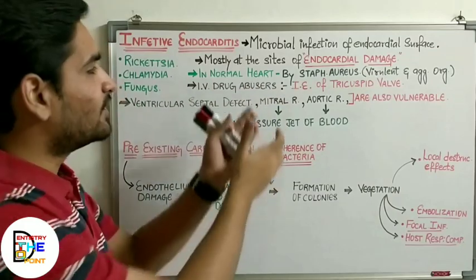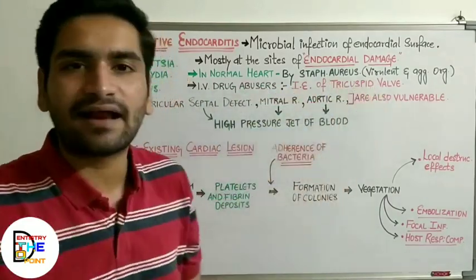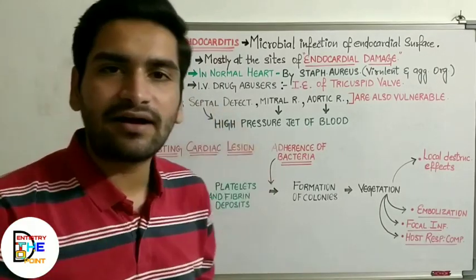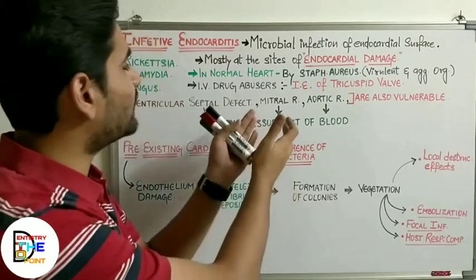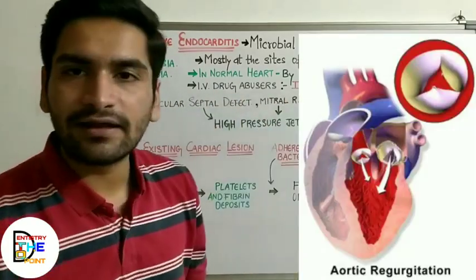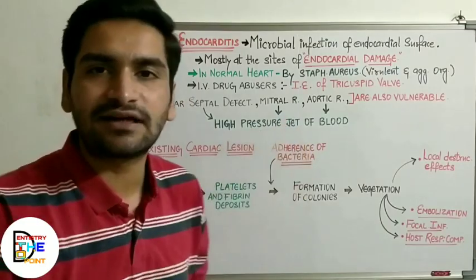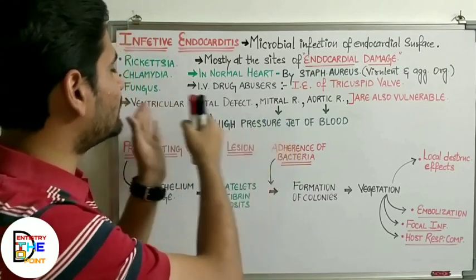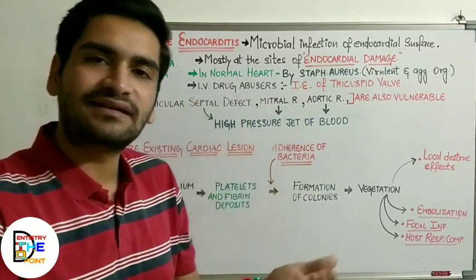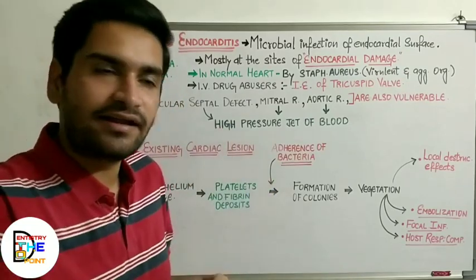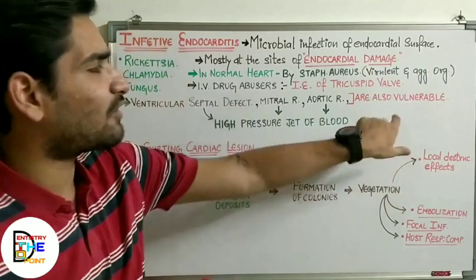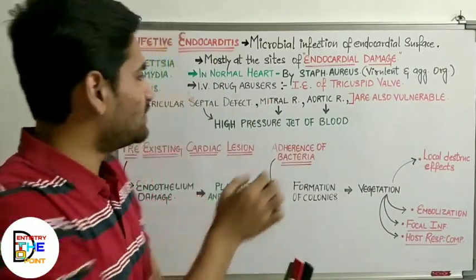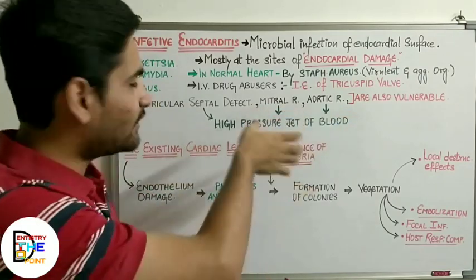There are various routes we'll discuss further. Intravenous drug abusers are mainly going to get affected at the tricuspid valve. There are also various congenital or acquired defects like ventricular septal defect, mitral regurgitation, or aortic regurgitation. These are mainly due to the high-pressure jet of blood, and these conditions are also vulnerable to infective endocarditis.